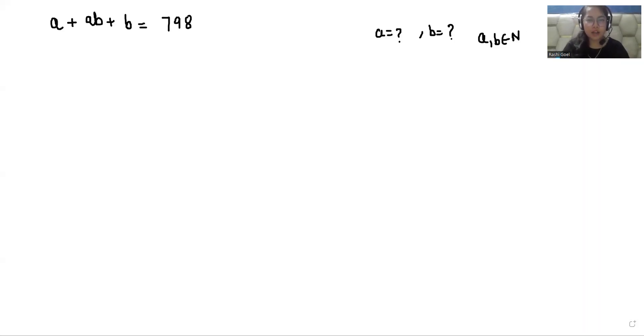Hello everyone, welcome to my channel. My name is Rashi Goyal and in this video we are going to solve A plus AB plus B equals 798, and we have to find the value of A and B, where A and B belong to natural numbers. So let's start with today's video.